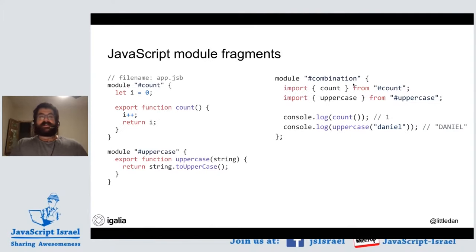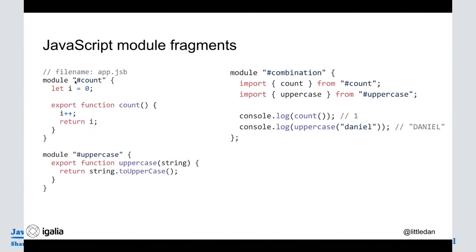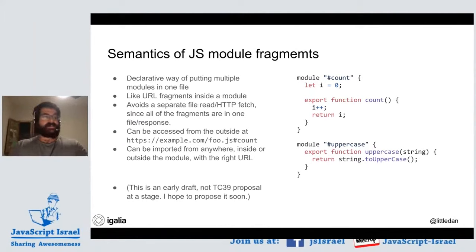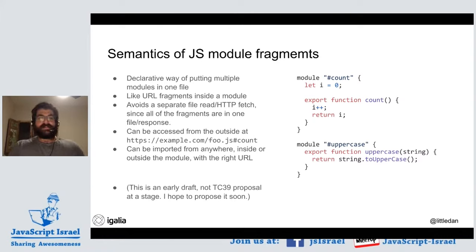We actually want a different concept for bundling. For example, we could call this JavaScript module fragments. You have fragments or IDs in an HTML page addressed by hashes — what if we had that for JavaScript modules? All the modules are in some particular file and you could import these inline module fragments by a URL that ends with a fragment. That's the basic idea. It's a very early draft — I have not fully written it up — but I think if we want to move forward with bundling, we might want to do something like this. It's a declarative way of putting multiple modules in one file, based on URL fragments or IDs.